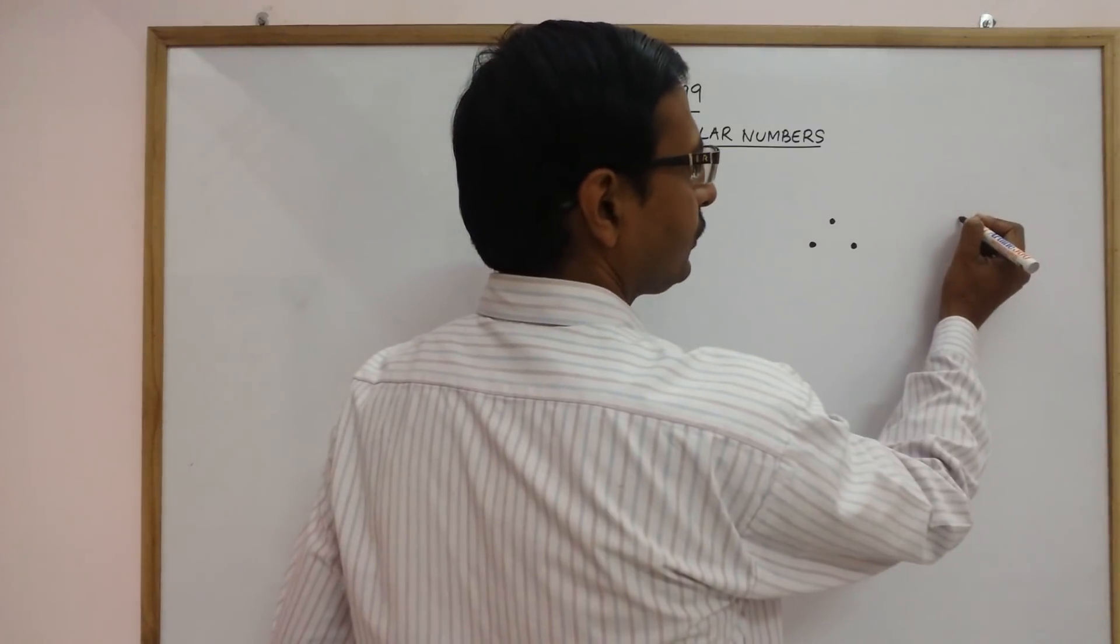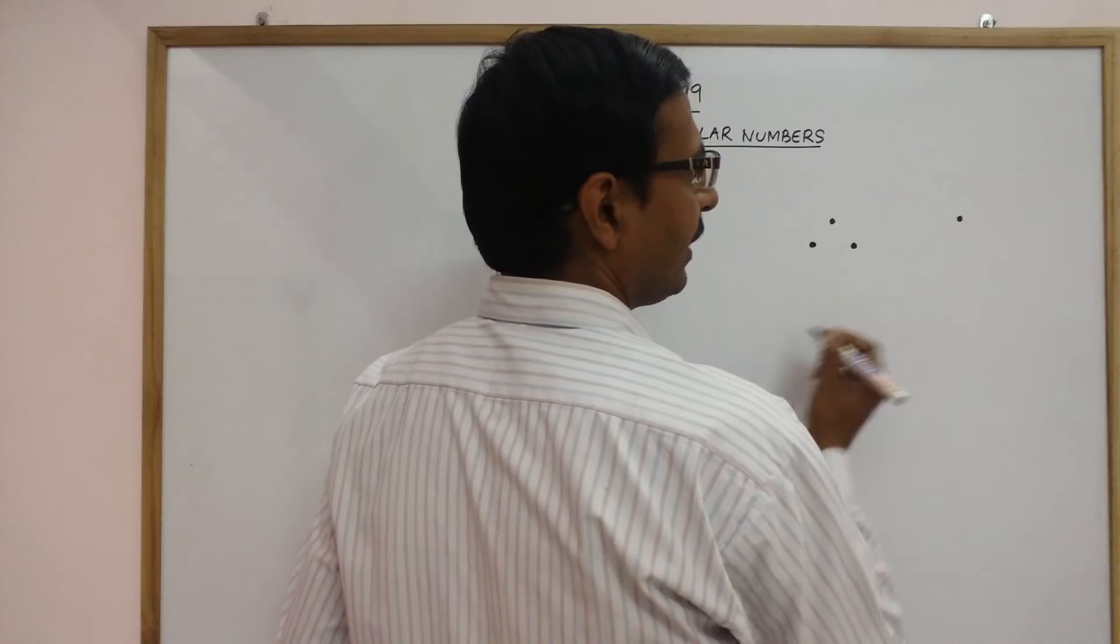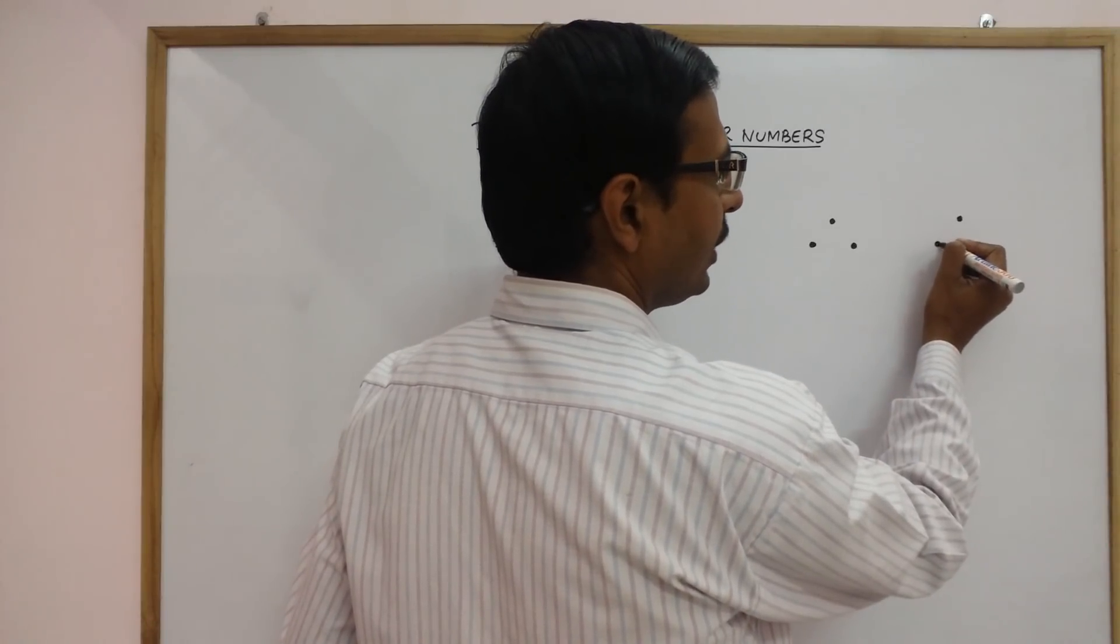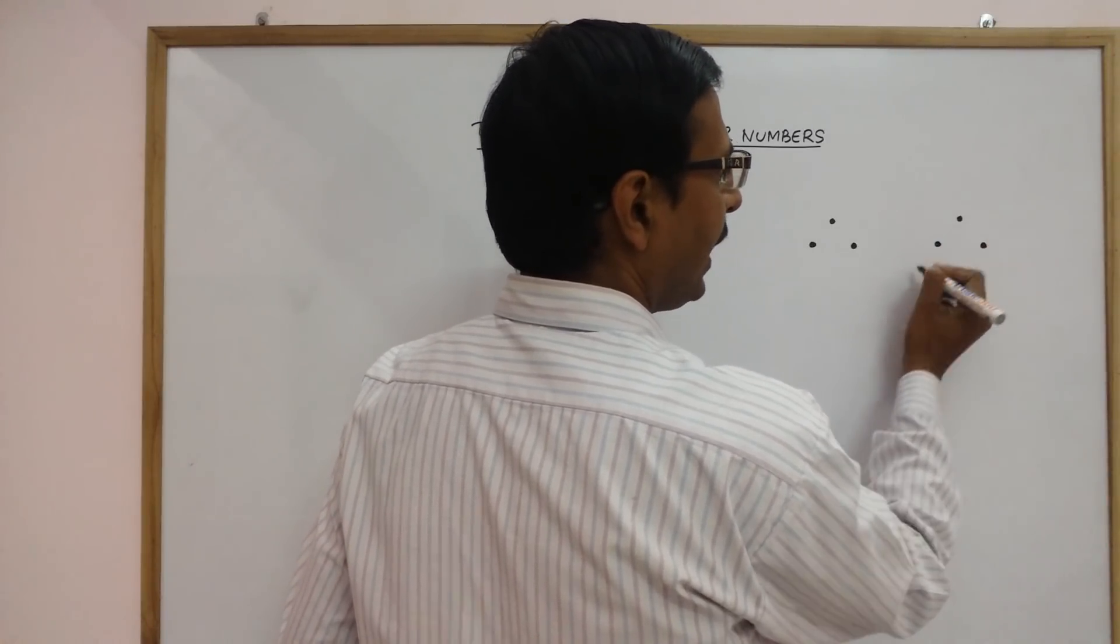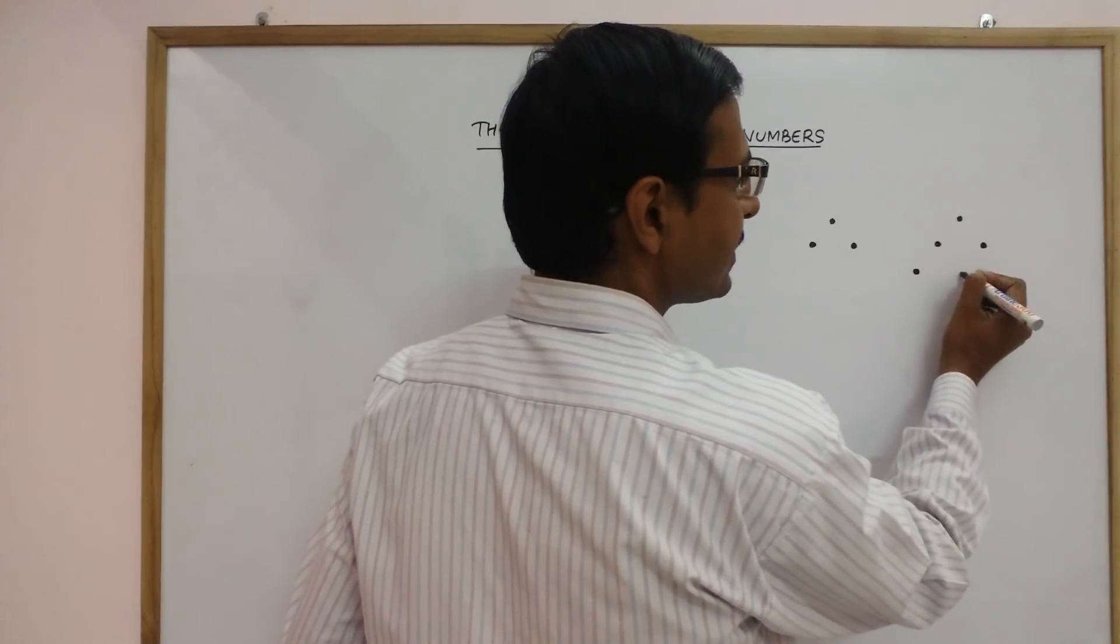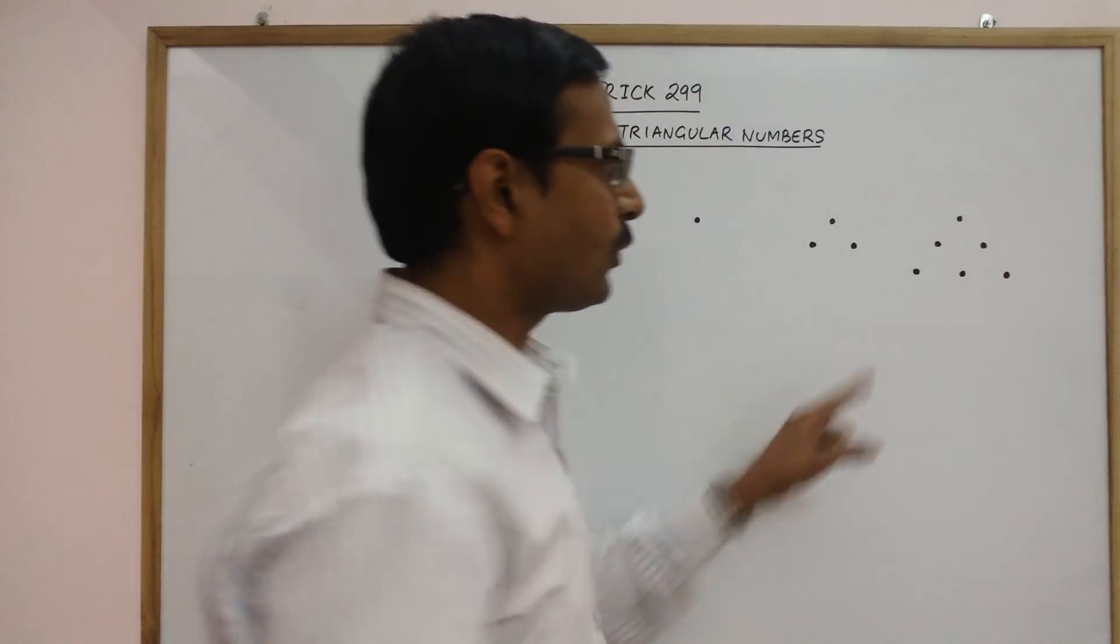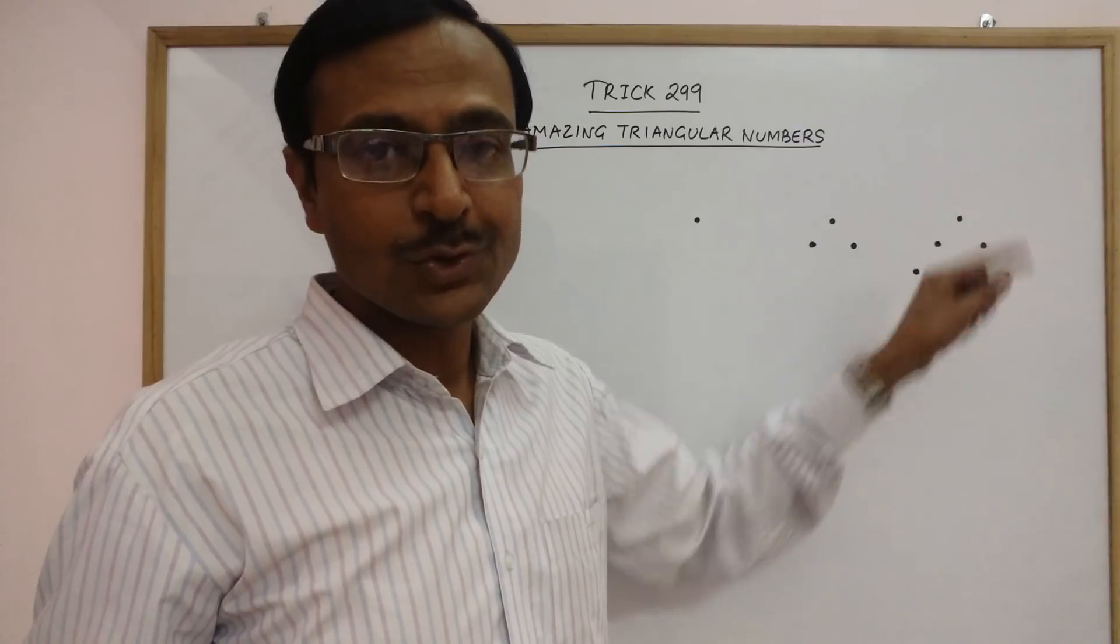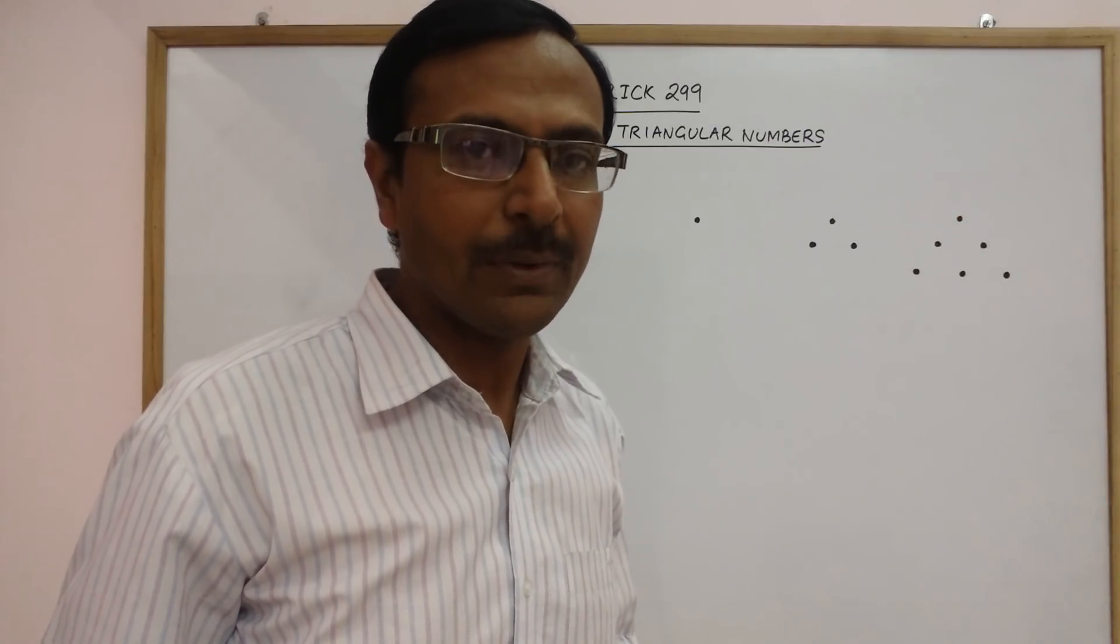Like, in the next one, I have 1 dot followed by 2 dots under that and then 3 more dots like this. So, this also forms the shape of a triangle. So, this is also a triangular number.